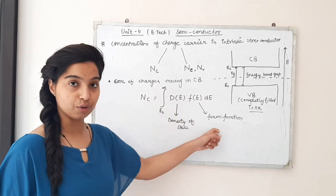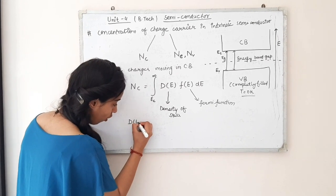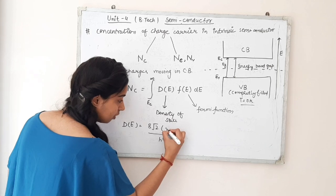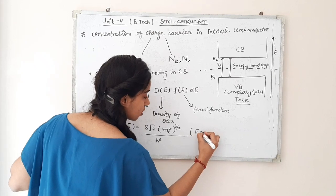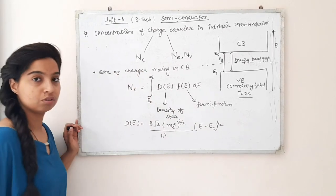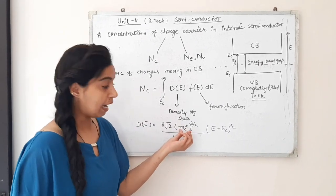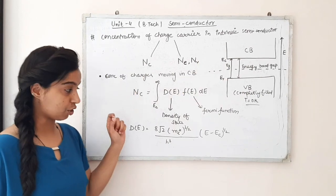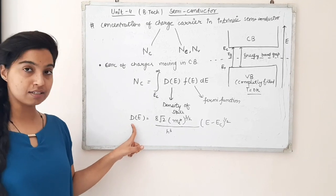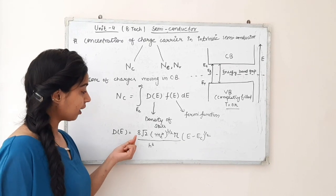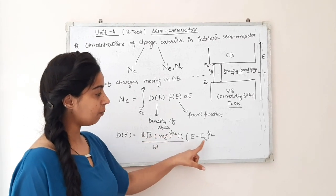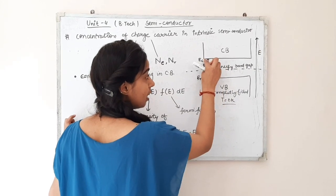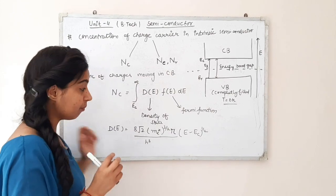The Fermi function gives the probability relative to the Fermi level, as studied in unit 2. Both expressions were solved in unit 2. Now, what is D(E)? D(E) is the density of states and is given by: (8√2 π / h³) × (me*)^(3/2) × (E − Ec)^(1/2), where me* is the effective mass of electrons moving from the valence band to the conduction band.